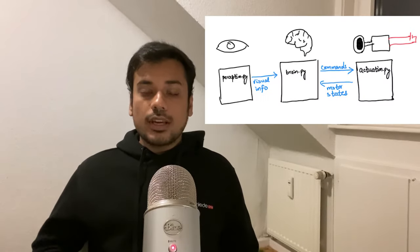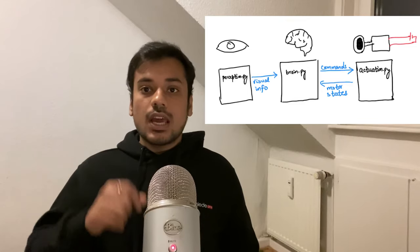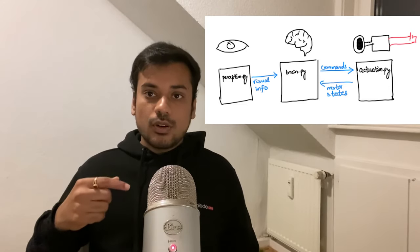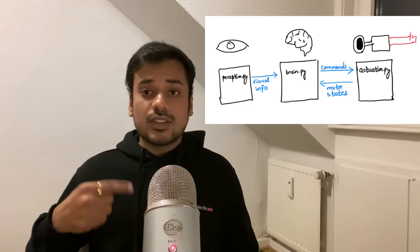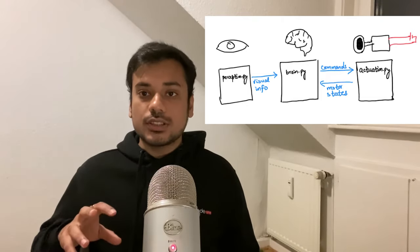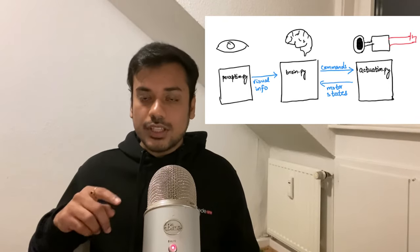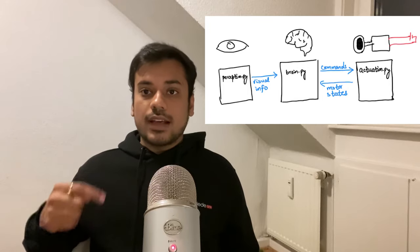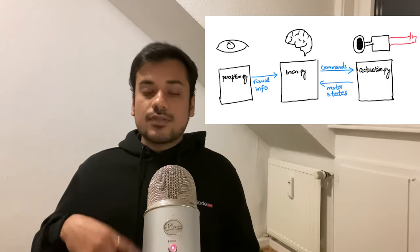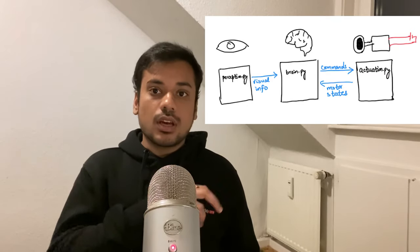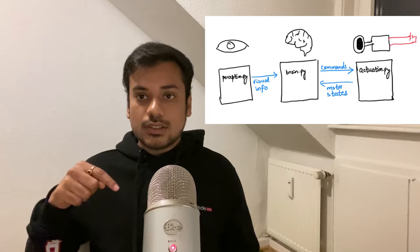One idea would be polling. In polling, perception will keep looking for trash, and when it finds any trash, it will write to a shared memory location about the presence and location of trash. Brain will keep polling the shared memory location to find the presence of data. Once it finds something, brain will process this information and write to another shared location. This shared location is constantly polled by actuation, so that it understands when brain has written a command. Then actuation will move according to what brain told it.